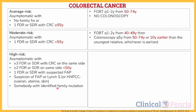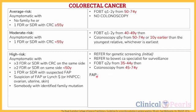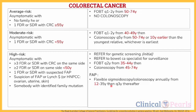For high-risk patients, we first refer them for genetic screening, followed by referral to bowel cancer specialists for surveillance. Usually we do FOBT every two years as early as 35 years old, up until they're 44, followed by colonoscopy until they reach 74 years old. However, if the patient's relative has already been diagnosed with FAP, we must screen them earlier — doing flexible sigmoidoscopy or colonoscopy annually as early as 12 years old, up until they're 35, then every three years thereafter.